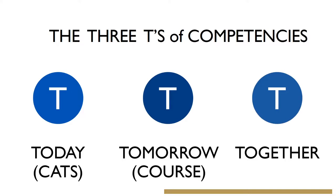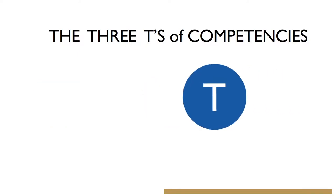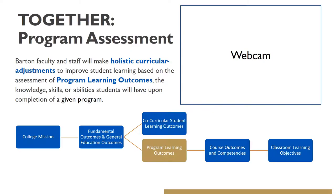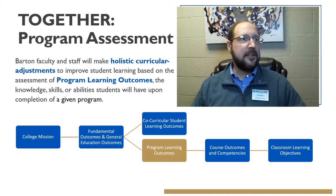So we think about student learning outcomes, competencies here. It's about how does what we teach them today affect what they're going to learn tomorrow, and how do those all work together. So when we think about a curriculum, it's how did the courses they're taking today affect the courses they take tomorrow, next semester. So again, together is program assessment.